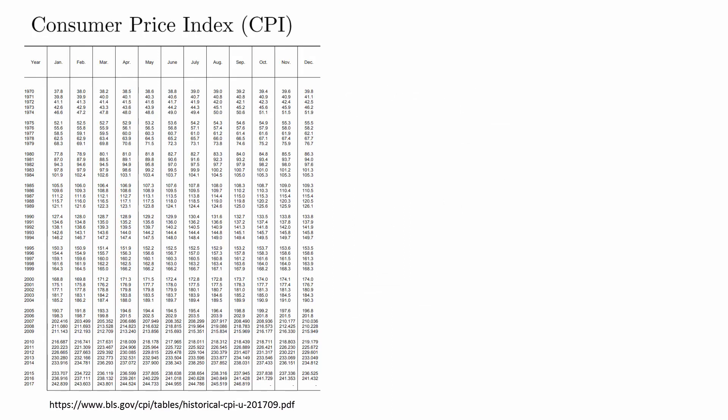The CPI uses the years 1982 to 1984 as the base for the calculation and sets this value to be 100. The CPI is calculated monthly. In January 2018, the CPI was 247.867. What this means is that if the CPI Market Basket would have cost $100 in the early 1980s, the exact same basket would cost $247 in 2018. In other words, you can buy less than half of what you used to be able to buy for the same amount of money.